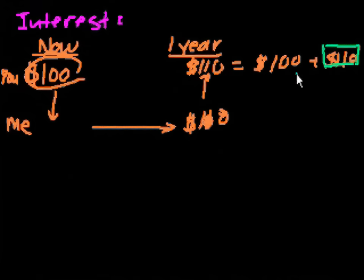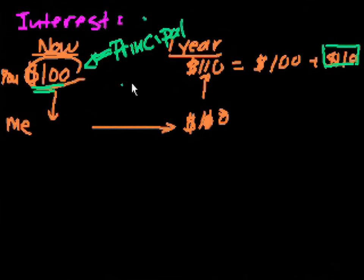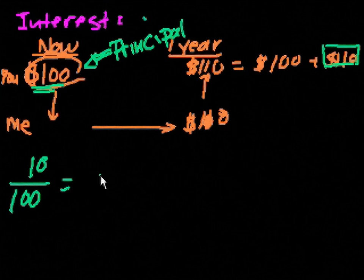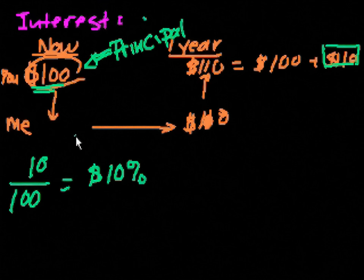And a way that it's often calculated is a percentage of the original amount that I borrowed. And the original amount that I borrowed, in fancy banker or finance terminology, is just called principal. So in this case, the rent on the money or the interest was $10. And if I wanted to do it as a percentage, I would say 10 over the principal, which is over 100, which is equal to 10%. So you might have said, hey Sal, I'm willing to lend you $100 if you pay me 10% interest on it. So 10% of $100 was $10. So after a year, I pay you $100 plus the 10%.